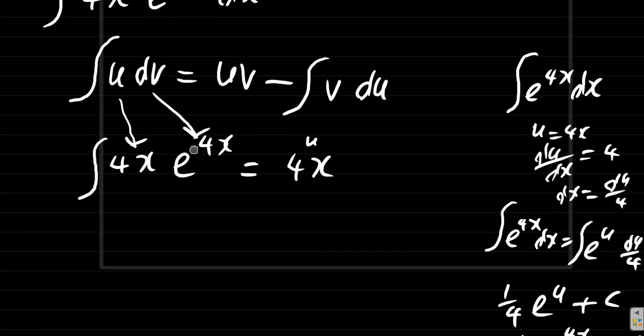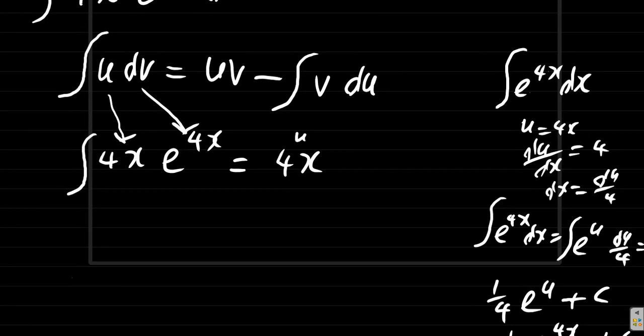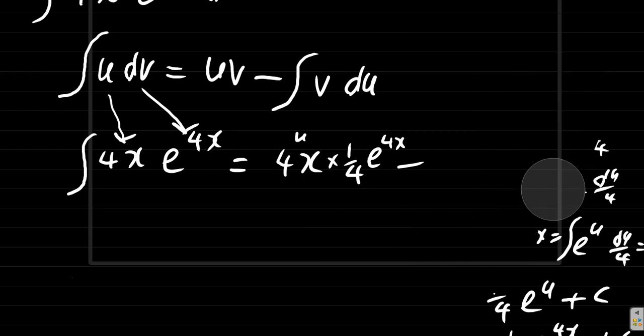Now back to where we were. This is u and v, the integral of e to the 4x. So you multiply by a quarter e to the 4x. Minus, let's do some erasing to make space.